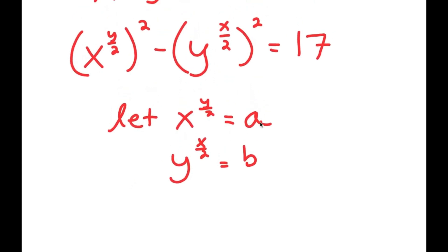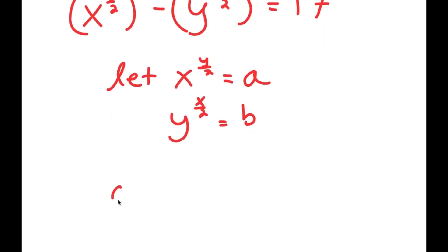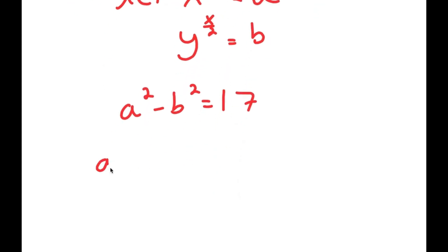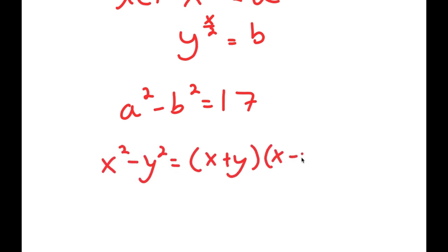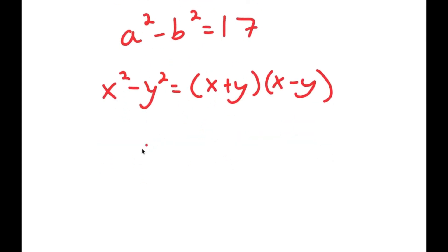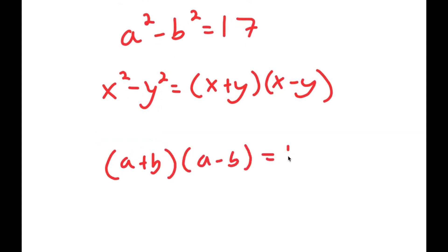I'm going to let a equal x to the power of y over 2, and b equal y to the power of x over 2. Substituting in, I get a squared minus b squared equals 17. Using the difference of squares identity — a squared minus b squared equals a plus b times a minus b — I get a plus b times a minus b equals 17.